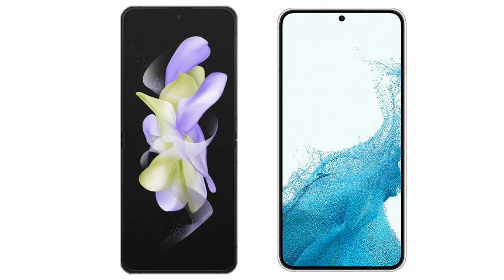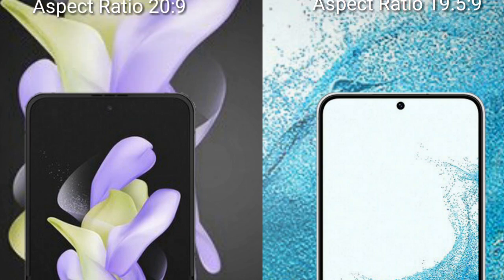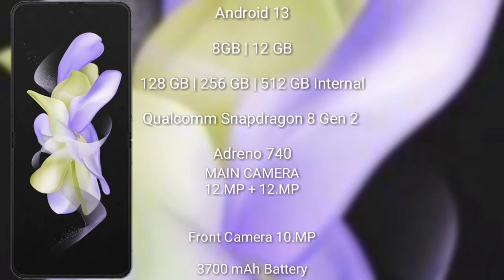I will compare the new Samsung Galaxy Z Flip 5 with the Samsung Galaxy S22. The Galaxy Z Flip 5 comes with a 6.7-inch Dynamic AMOLED display. It runs on Android 13, comes with 8GB or 12GB RAM, 128GB, 256GB, or 512GB internal storage, and is powered by a Qualcomm Snapdragon 8 Gen 2 processor with Adreno 740 GPU.